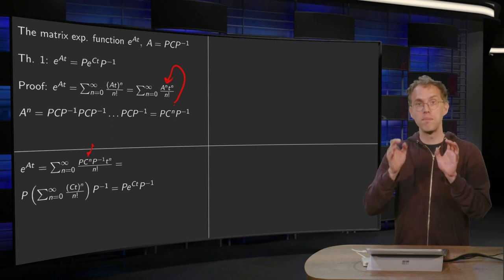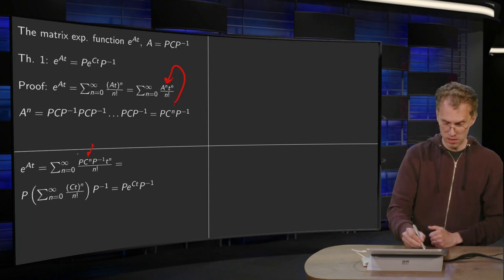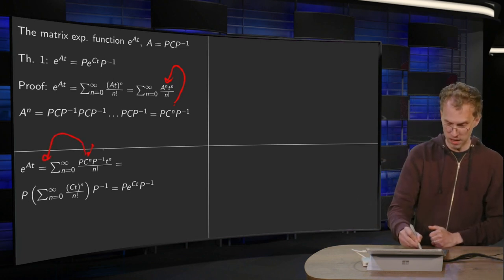Now, those P and P inverse, they do not depend on n, so you can take them out of the sum. So take the P in front and the P inverse to the back, so that's what we have done in this step over here.